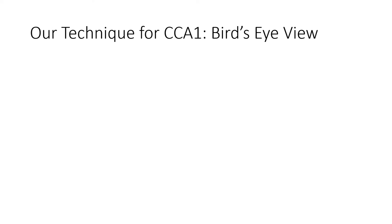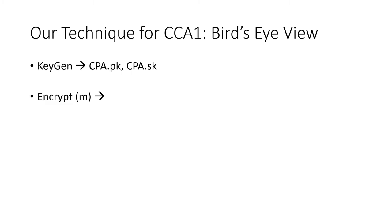Let me give a bird's eye view of our technique for achieving CCA1 security. A key requirement and the main motivation for our work is that the key generation algorithm remain identical to that for an arbitrary CPA secure encryption scheme, which means KeyGen outputs a CPA public key and the corresponding secret key. The Encrypt algorithm on input a message M evaluates a PRG on a random seed and then XORs the result with the message M — this constitutes the first component of the ciphertext.